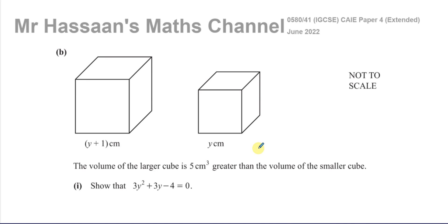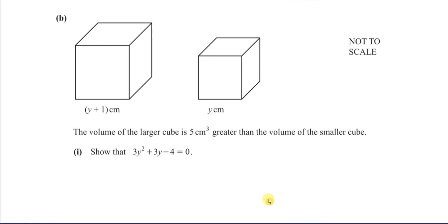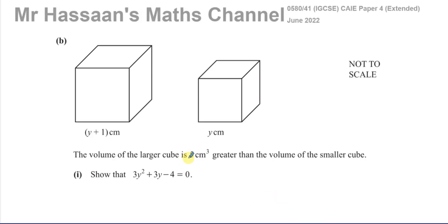Now for part B. We have two cubes — all lengths are the same in a cube, so the larger cube has side (Y+1) and the smaller has side Y. It says the volume of the larger cube is 5 centimeters cubed greater than the volume of the smaller cube. We need to show that 3Y squared plus 3Y minus 4 equals 0. So (Y+1) cubed equals Y cubed plus 5.